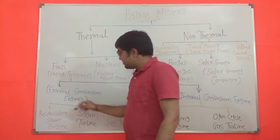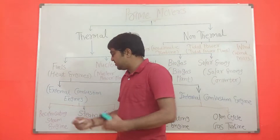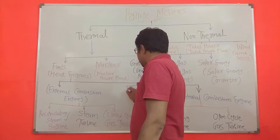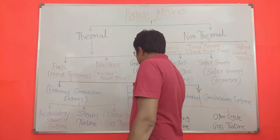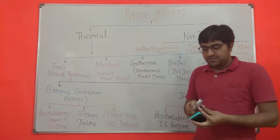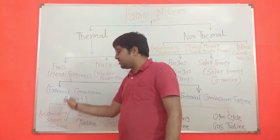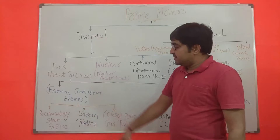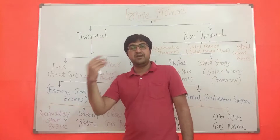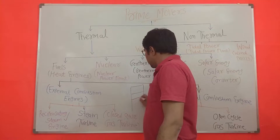External combustion engines can be further classified. The first subtype is the reciprocating engine. It is called a reciprocating engine because a piston-cylinder device is used — the piston moves to and fro from TDC to BDC, which is called reciprocating motion. In a reciprocating steam engine, combustion takes place outside; heat energy is supplied to water, water is converted into steam, and this steam is used to reciprocate the piston.